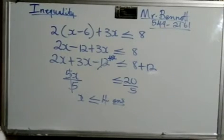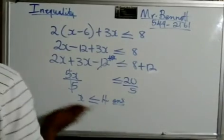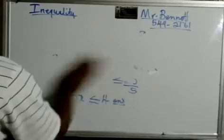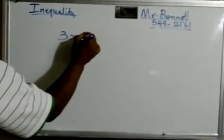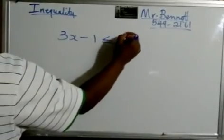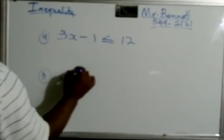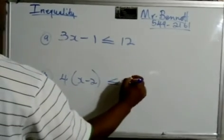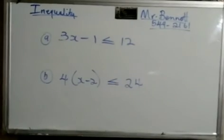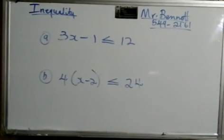All right, guys. I want you guys to try this one. 3x minus 1 is less than or equal to 12, and 4 times x minus 2 is less than or equal to 24. You can leave the answer in the comment section. Thank you guys for watching. Have a nice day.